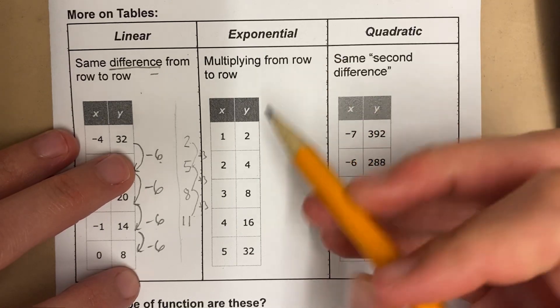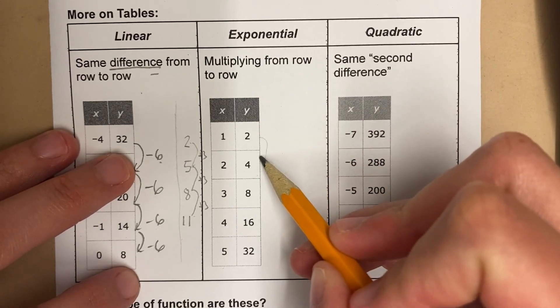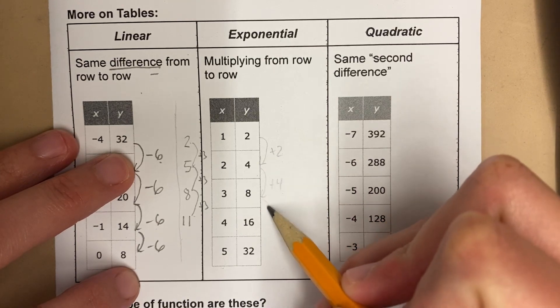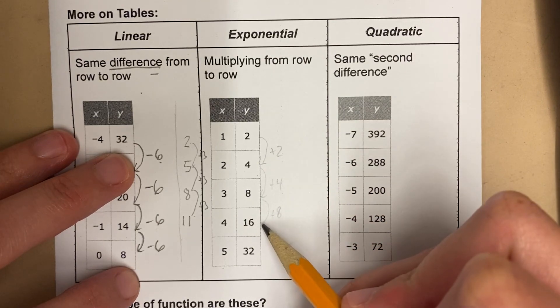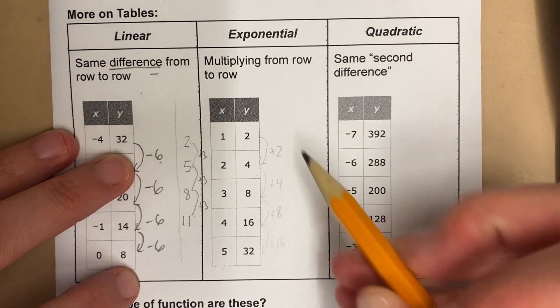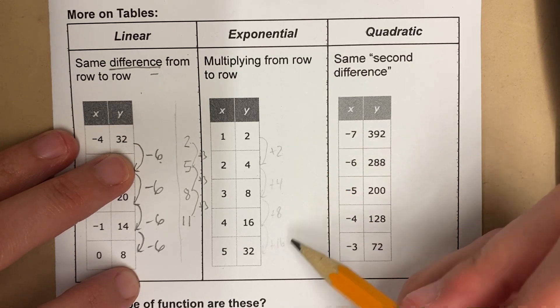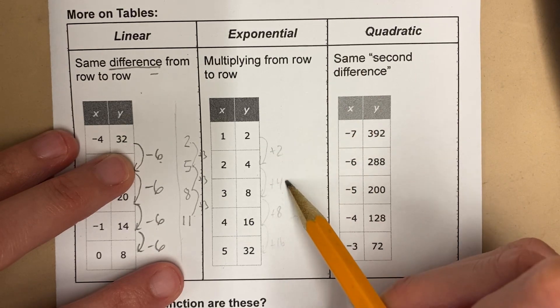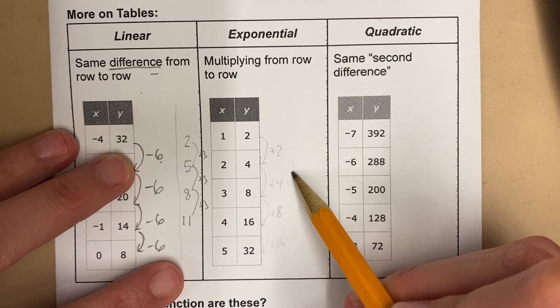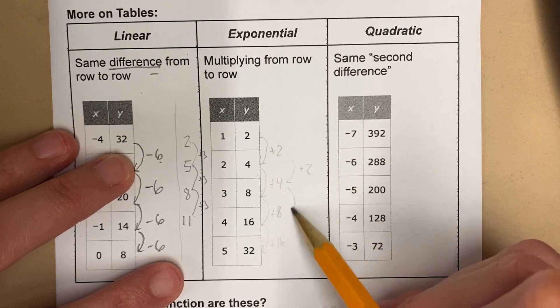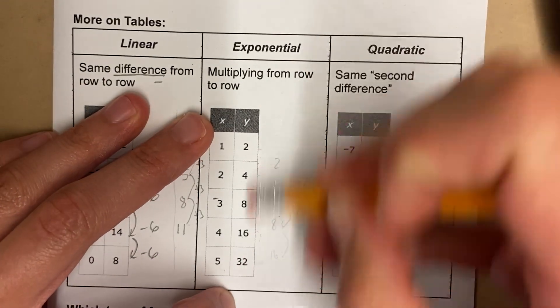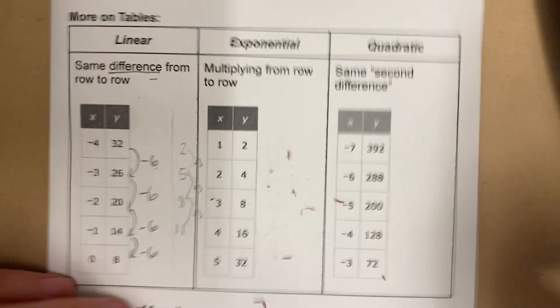So what I need to observe here, I could start with this. This could be plus 4, this could be plus 8, this is plus 16. You can see we're not adding the same thing from row to row. Now you're going to see on quadratic, I'm going to check the second difference. This is plus 2, this is plus 4, this is plus 8. That's called the second difference. That also doesn't work here. So this one must be exponential.